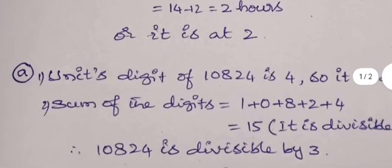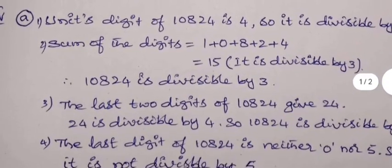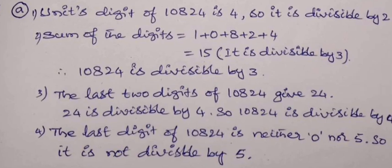In essay question, two questions are given, internal choice is there, A and B. In the first one A, what is required to find means, one number is given, 10824, and it should be checked whether it is divisible by 2, 3, 4 and 5. So for that, a number is divisible by 2 if the units place is any even number.